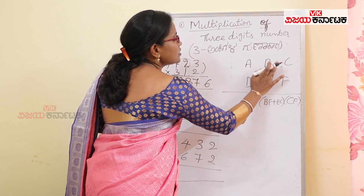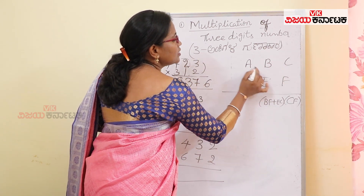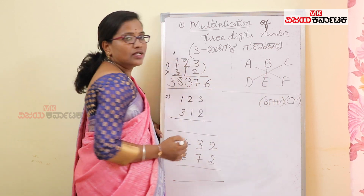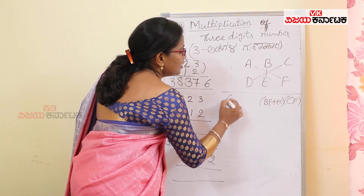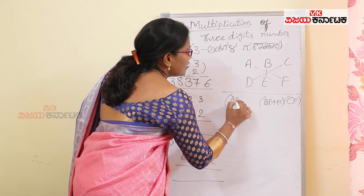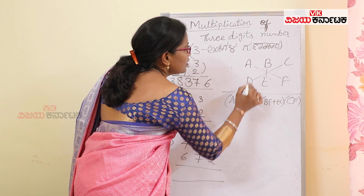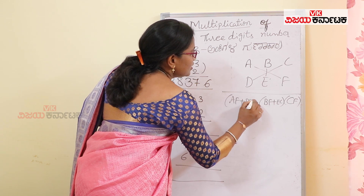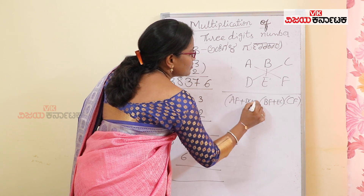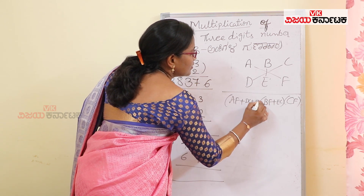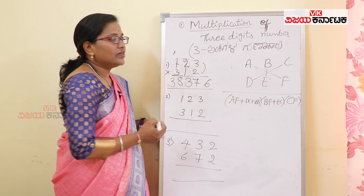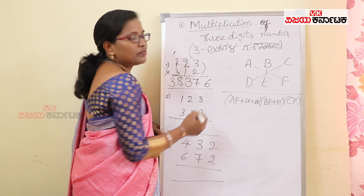Consider all 6 digits. Then AF plus DC plus BE — this is to add more than 100 places.